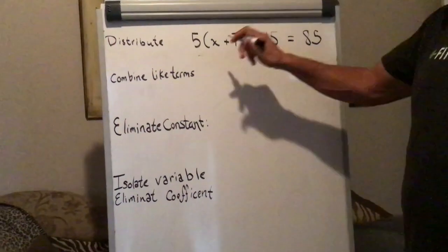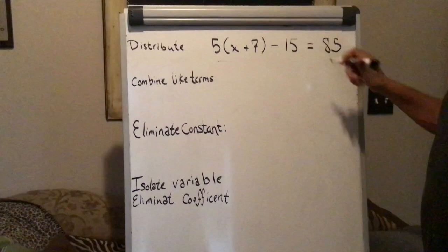In this equation, 5 times x plus 7, minus 15 is 85, first we must distribute.